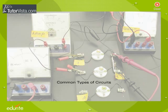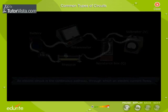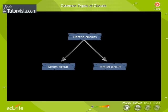Common Types of Circuits. An electric circuit is the continuous pathway through which an electric current flows. Series circuit and parallel circuit are the two common types of circuits. A complicated circuit, in fact, is a combination of parallel and series circuits.